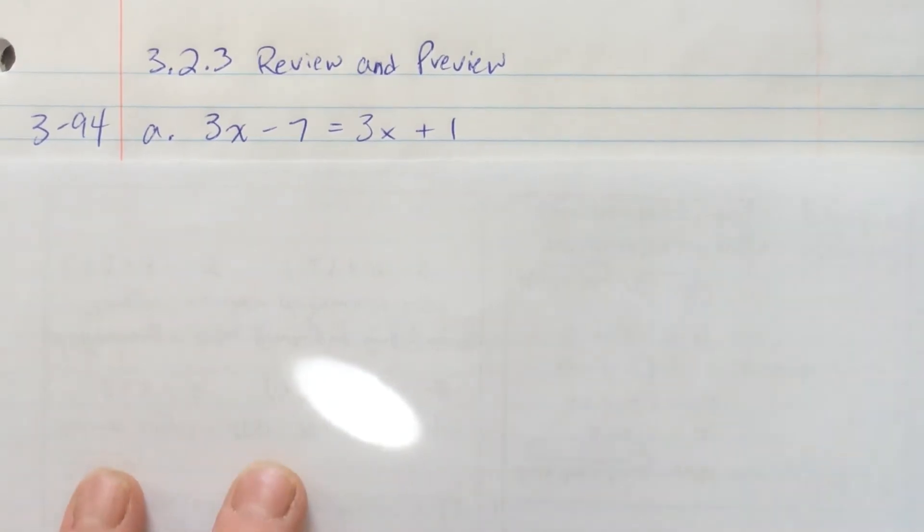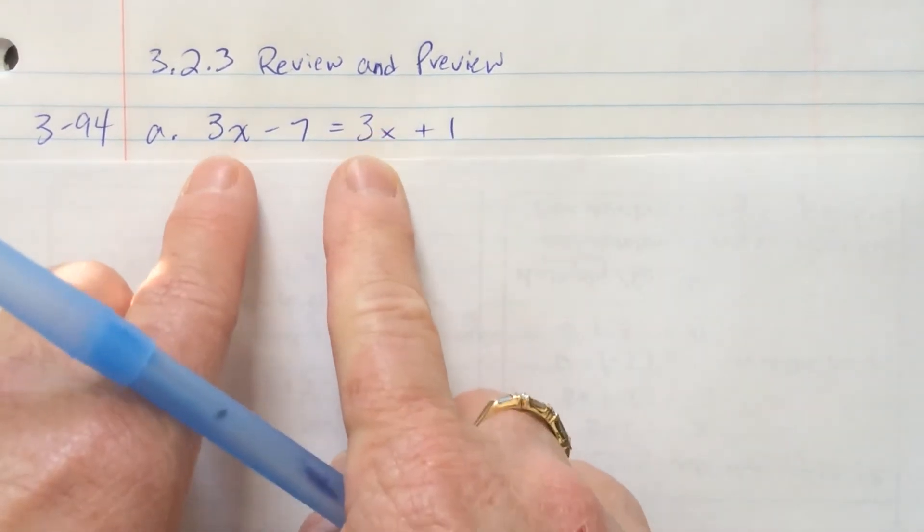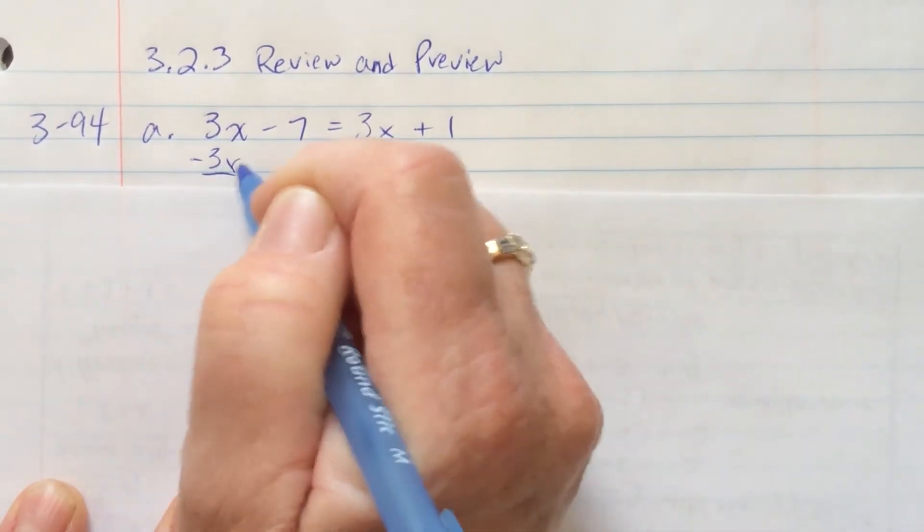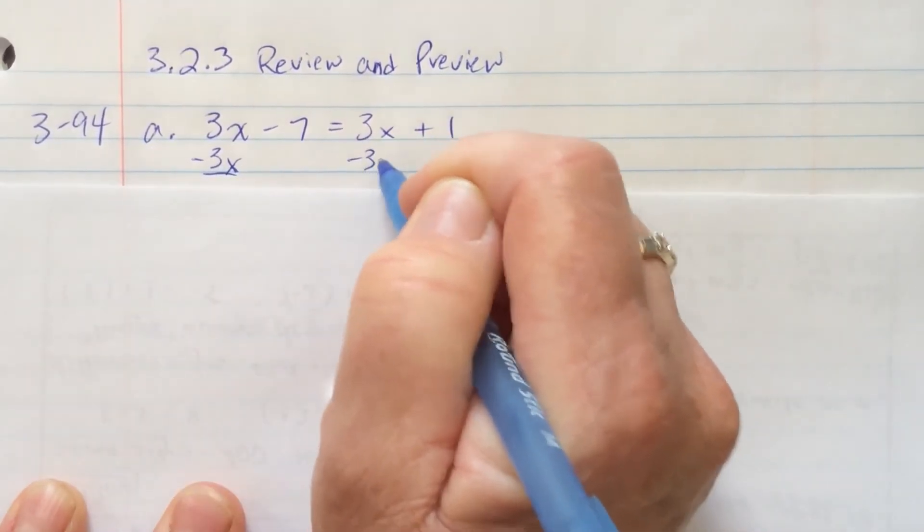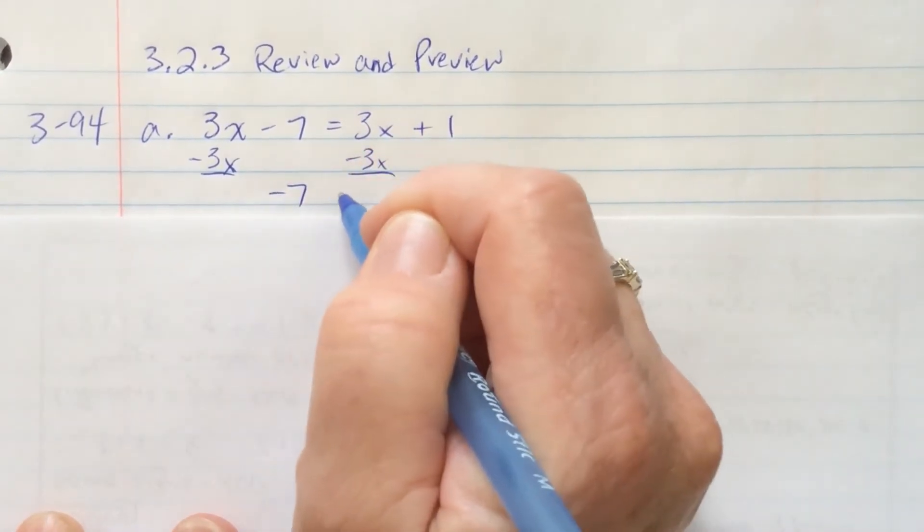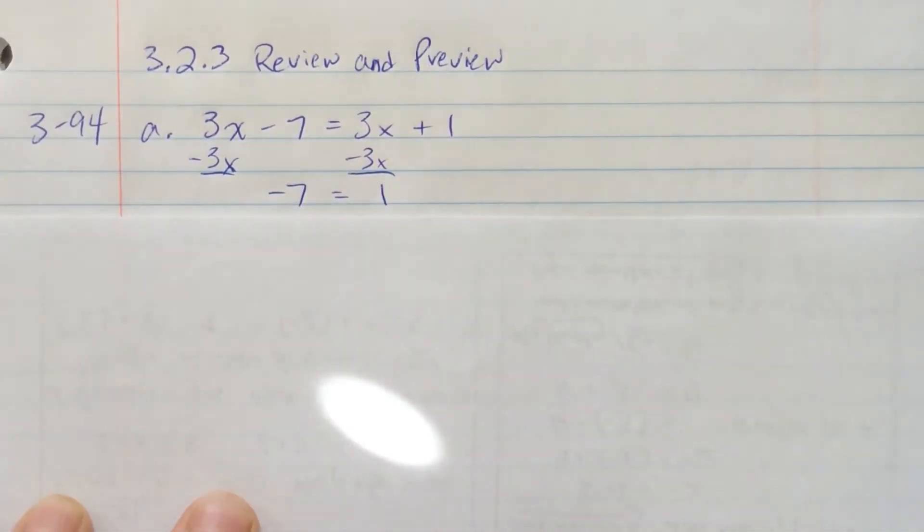3x minus 7 equals 3x plus 1. The first thing that I need to do is get rid of the 3x. We're going to take 3x away from both sides because we can't have the variables on both sides. That leaves me with negative 7 here and 1 here.